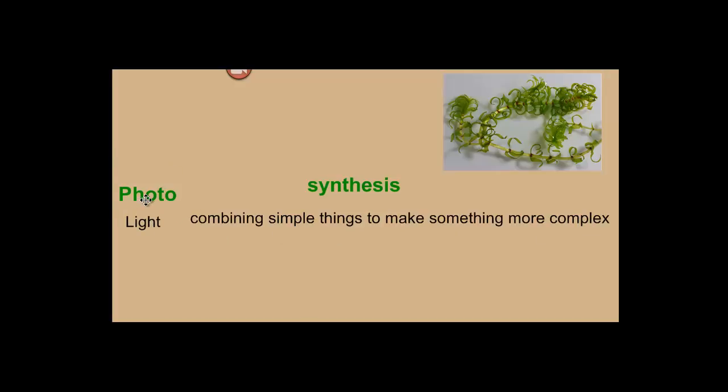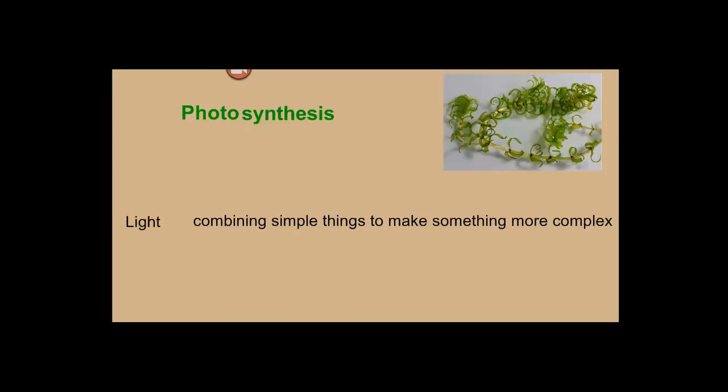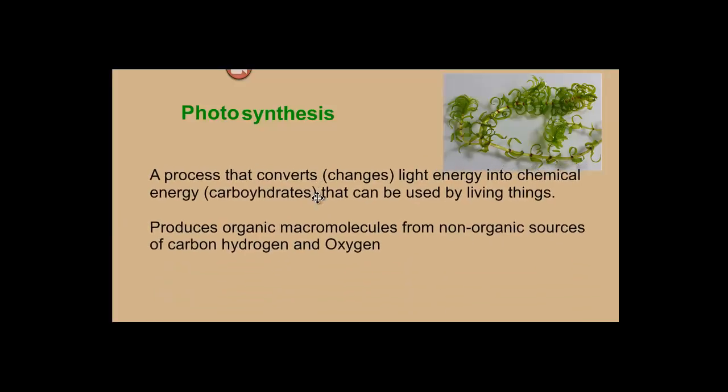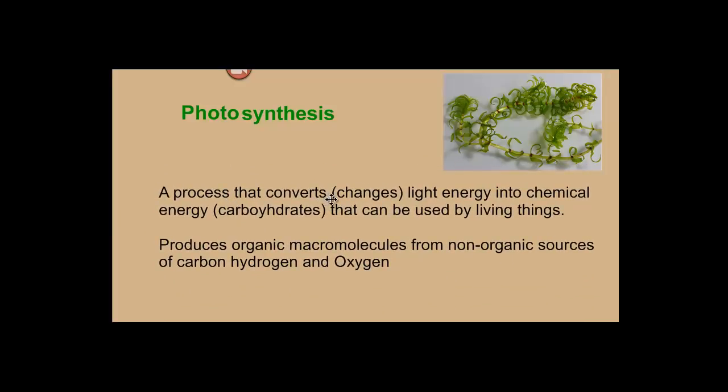So the definition of photosynthesis that we use in class is this: it's a process that converts or changes light energy into chemical energy, in this case carbohydrates. Remember carbohydrates are one of our four macromolecules that store energy, and that energy can then be used by living things. It also produces organic macromolecules from non-organic sources of carbon, hydrogen, and oxygen.